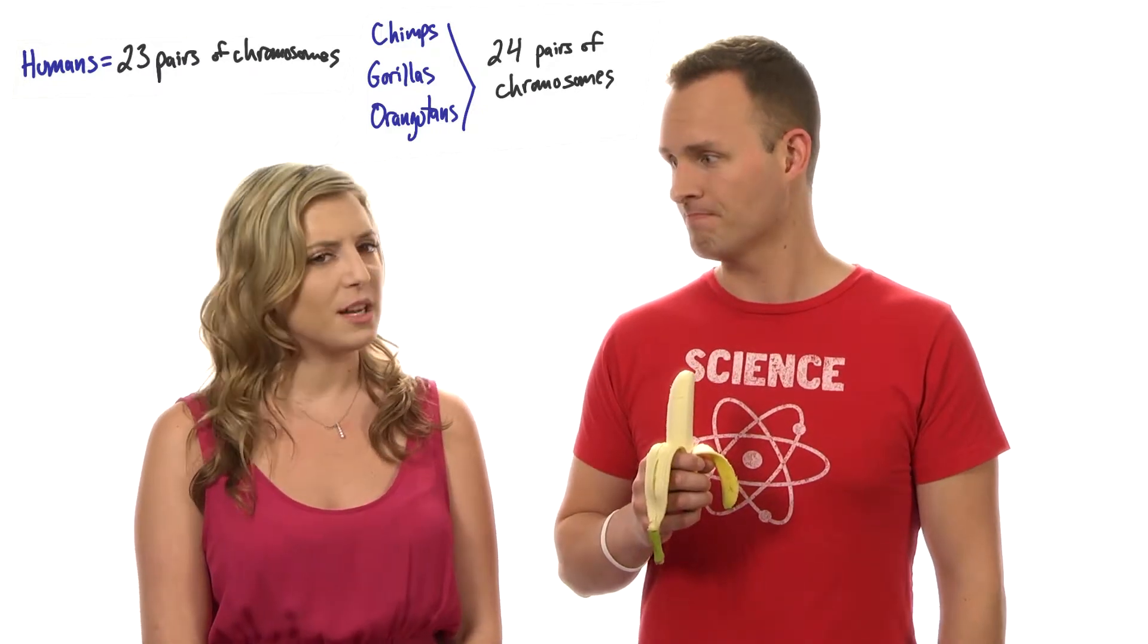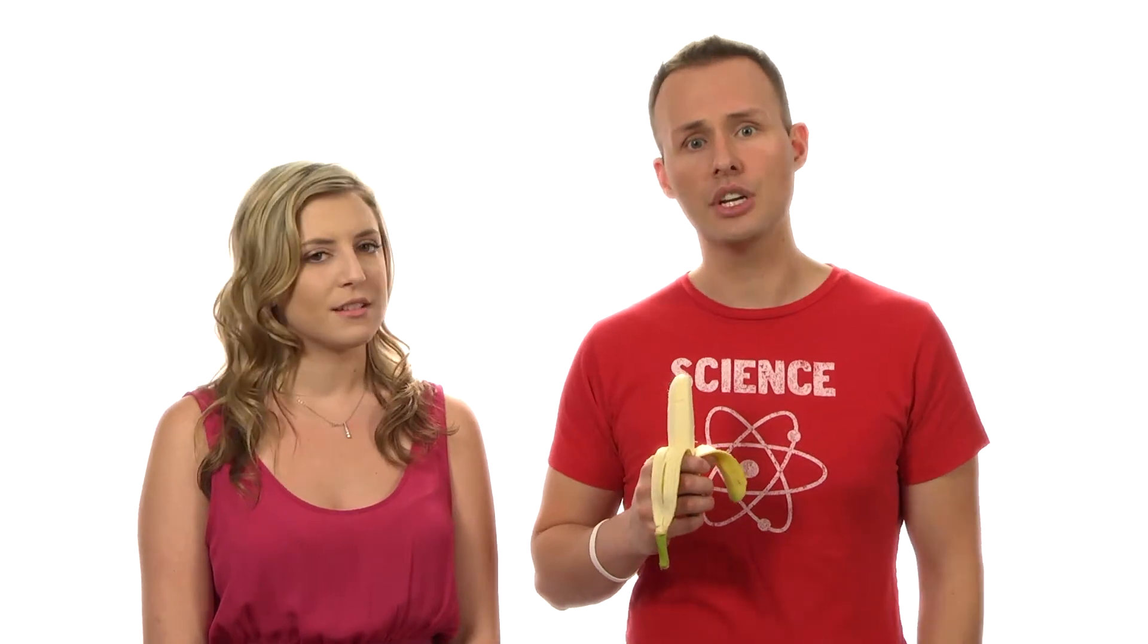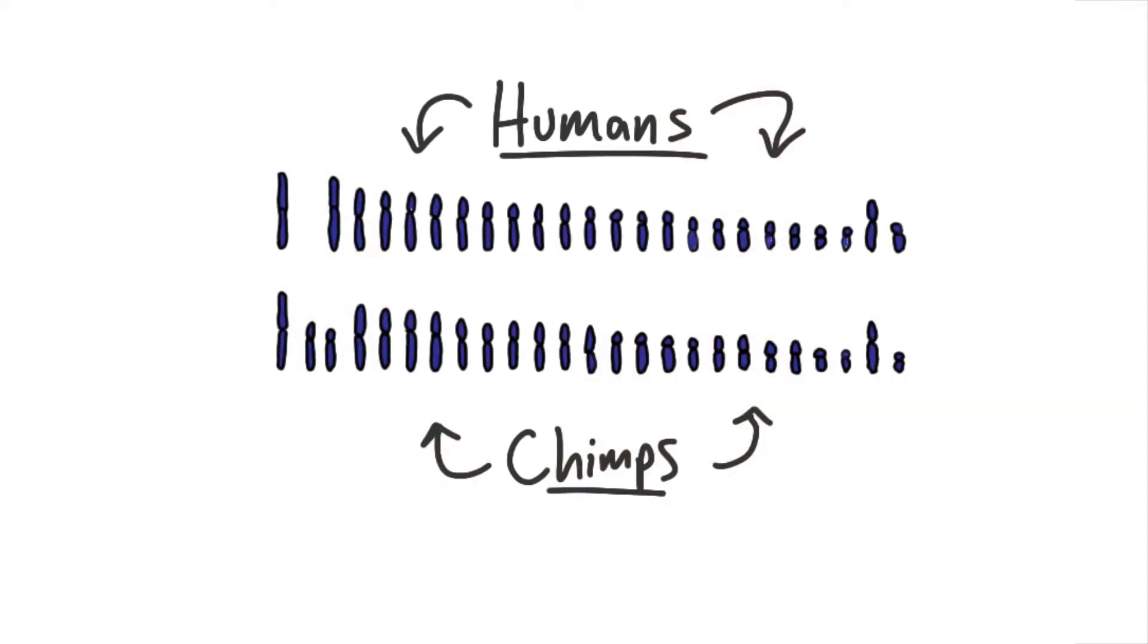Really? They have one more than we do. Why is that? Well, take a look at this image here. Wow, it looks like our chromosome 2 doesn't exist for chimps, and they also have two smaller ones.